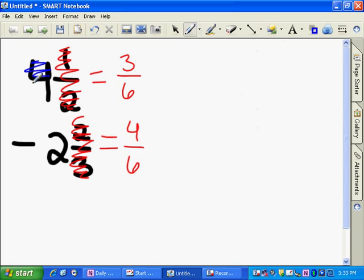So I'm going to borrow from this 4 and I'm going to make it a 3. When I take the 1 whole from here, I'm going to add it back in over here, but I'm going to add in 6 over 6 for 1 whole. So basically, we are replacing 4 with 3 and 6 over 6.